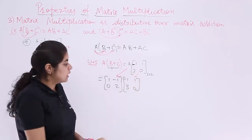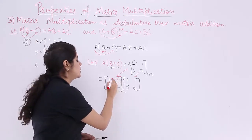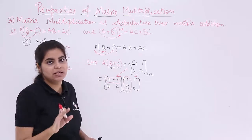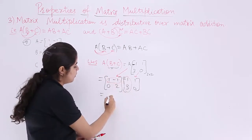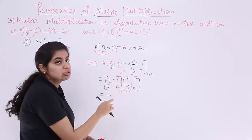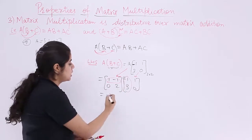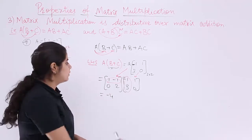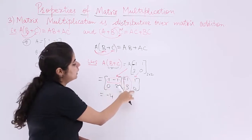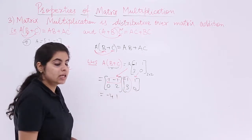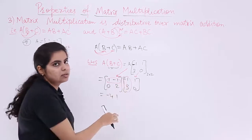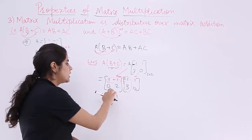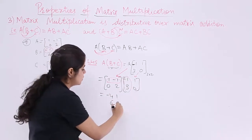Computing A×(B+C): first row, first column: 1×(-1) = -1, (-1)×3 = -3, so -1 + (-3) = -4. First row, second column: 1×1 = 1, (-1)×0 = 0, so 1. Second row, first column: 0×(-1) = 0, 2×3 = 6, so 6. Second row, second column: 0×1 = 0, 2×0 = 0, so 0. The LHS result is [-4, 1; 6, 0].